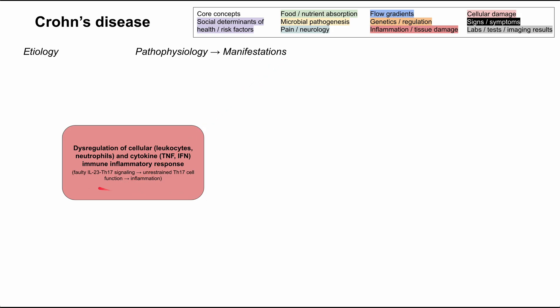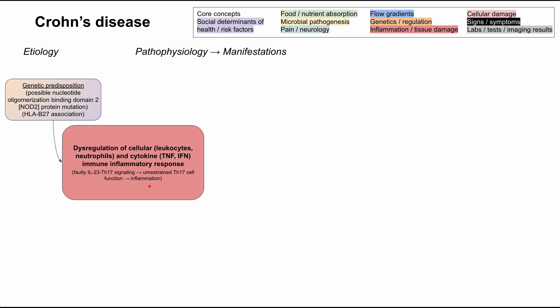There's a bit more detail here that's not critical, but in general you have faulty IL-23 signaling with Th17, which leads to unrestrained Th17 cell function, and that's what leads to inflammation. We'll be talking about the downstream effects of this dysregulated inflammatory response, but first let's go into the etiologies.